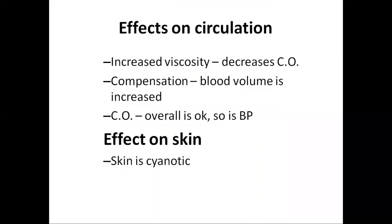The effect of polycythemia on circulation: since RBC count is higher, they offer more resistance to blood flow, resulting in increased viscosity. This leads to decreased blood flow to the right side of the heart, decreased cardiac output, and decreased blood pressure. However, the increased number of RBCs also leads to increased blood volume, which nullifies the effect of increased viscosity. So there is no net effect on cardiac output or blood pressure — both remain overall normal.